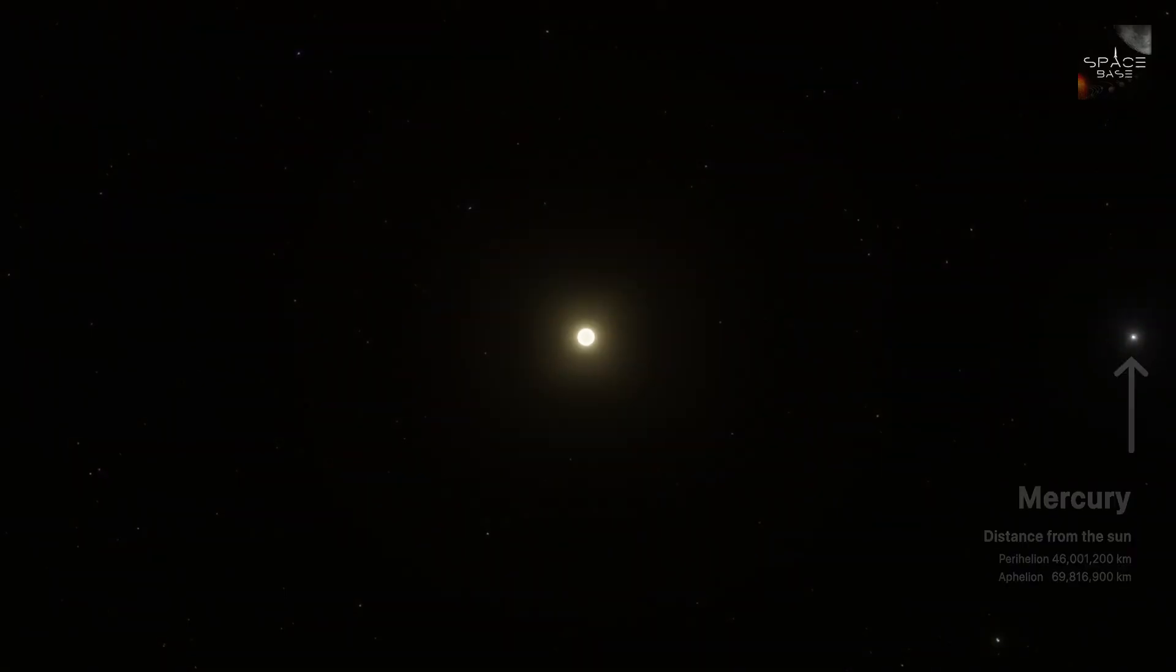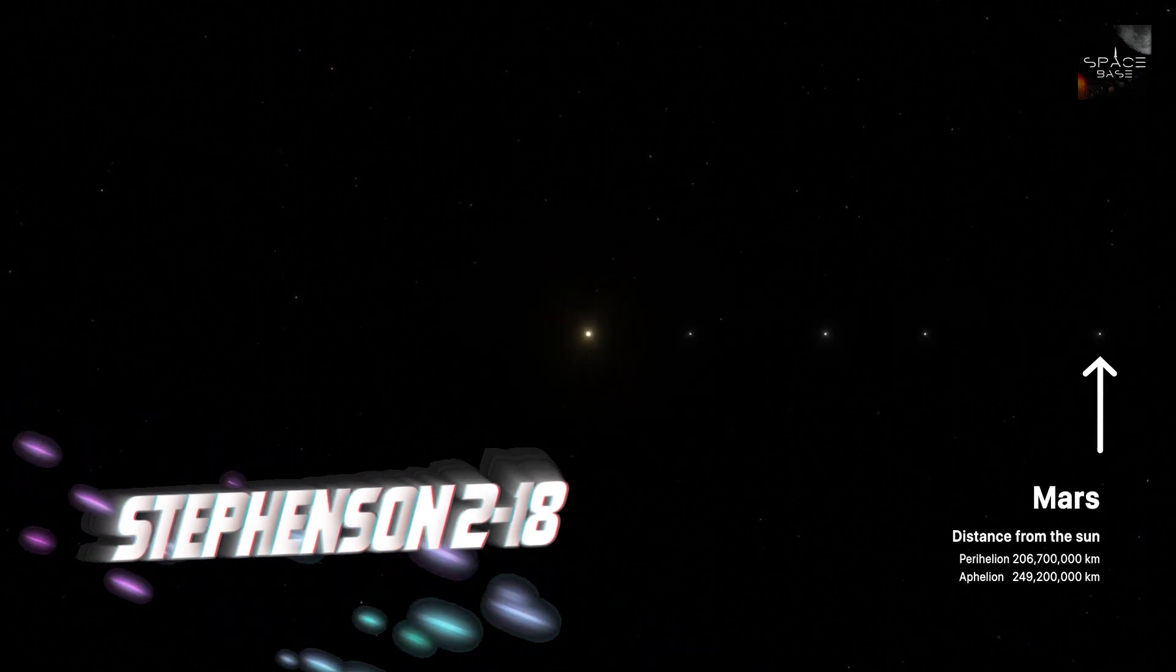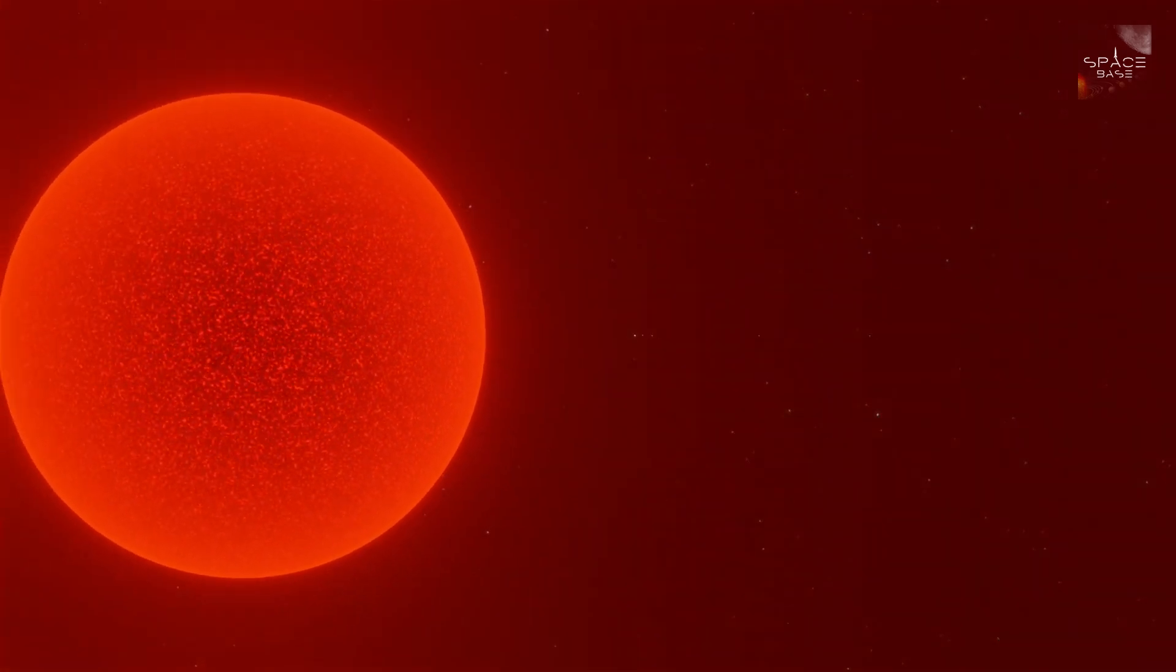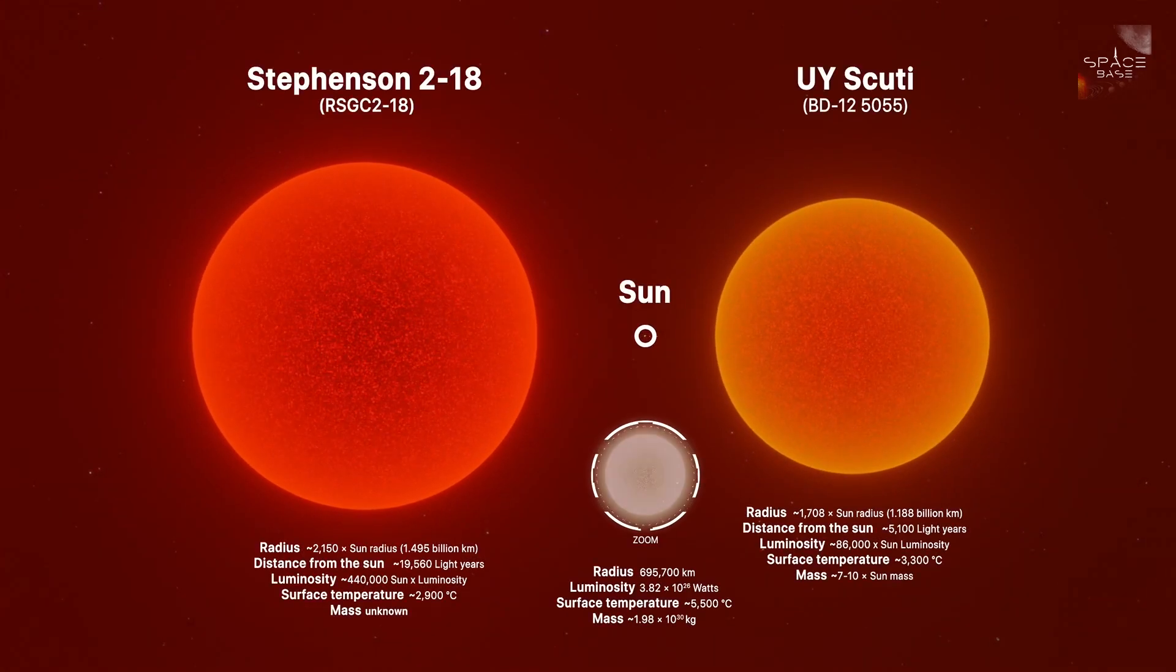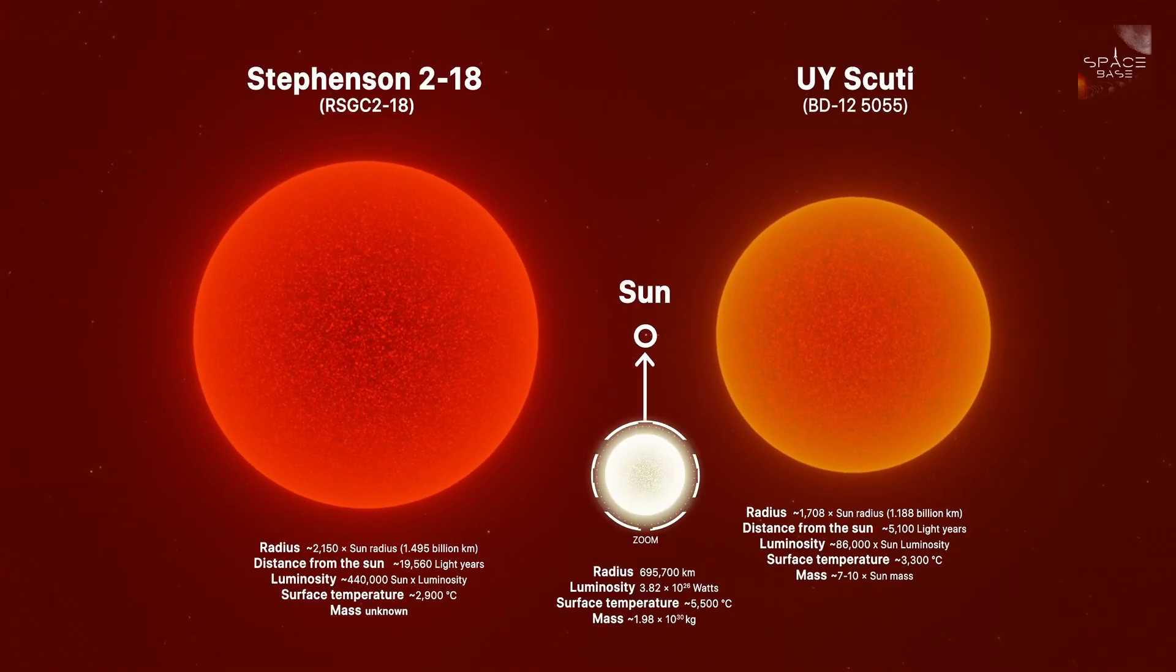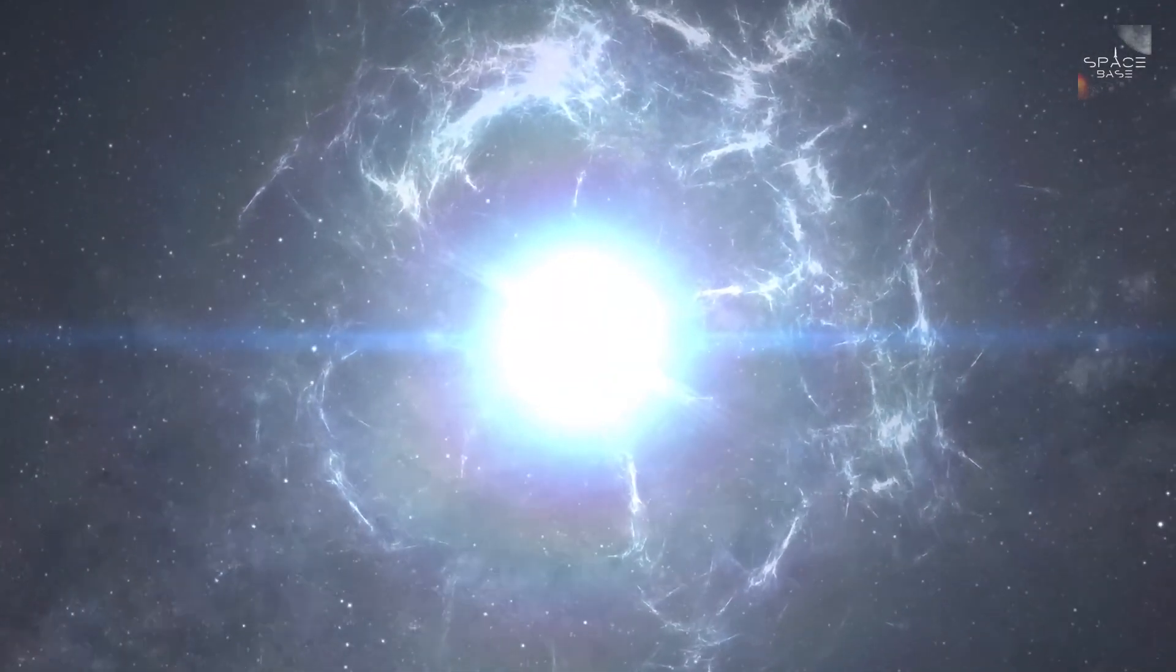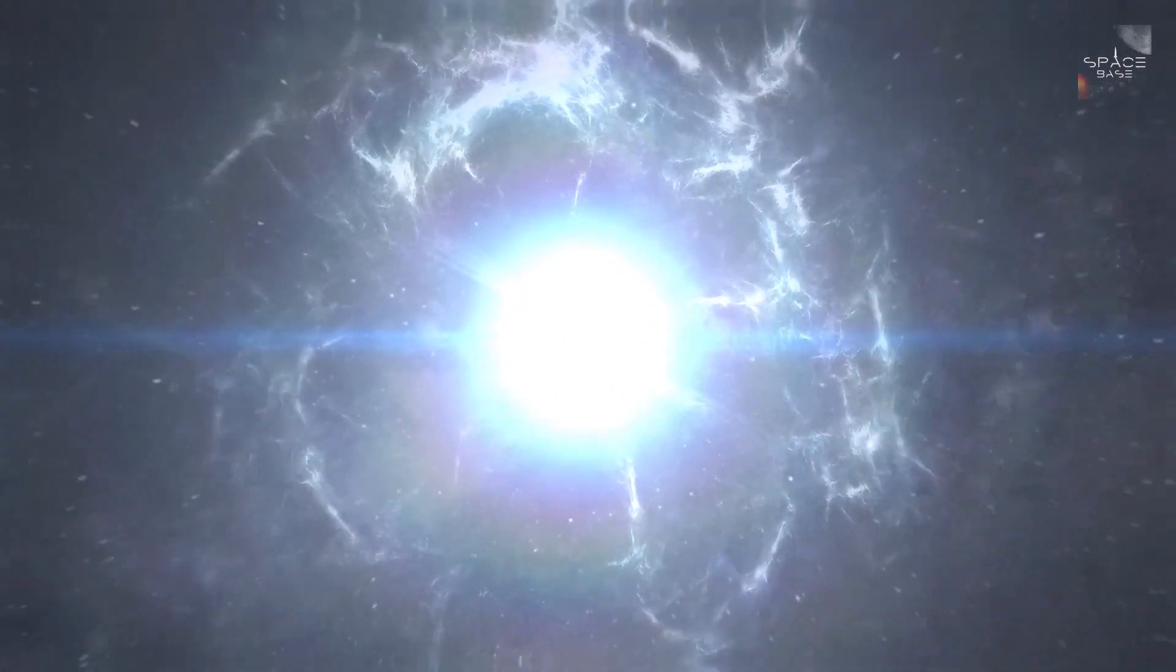Around 18,900 light-years from us, Stevenson 2-18, a beautiful beast, lives out its life as being one of the most extreme objects ever to be discovered. This red super, possibly hypergiant, resides in the Scutum constellation and is said to be at the age of 20 million. Currently known as the largest star in the universe, Stevenson 2 is extremely massive in both size and mass.